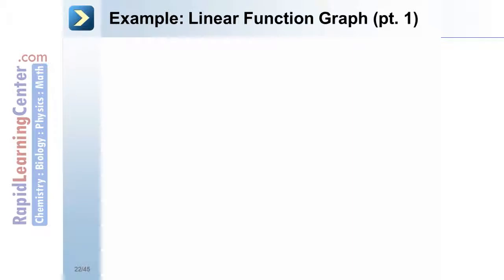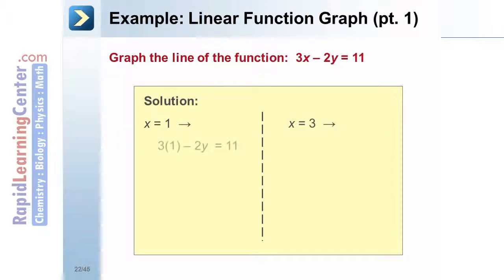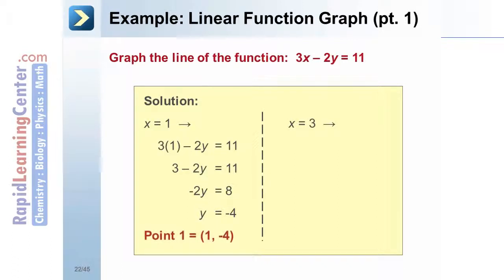How to graph linear functions: one, find two points on the line; two, plot the two points on the coordinate plane; and three, connect the points with a line. Example — graph the solution set of the function 3x minus 2y equals 11. First, find two points using x equals 1 and x equals 3. Plug x equals 1 into the equation: 3 minus 2y equals 11. Subtract 3 from both sides, then divide by negative 2 to get y equals negative 4. The first point is (1, negative 4).